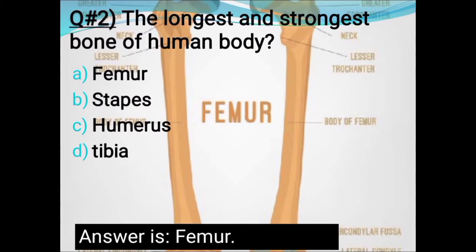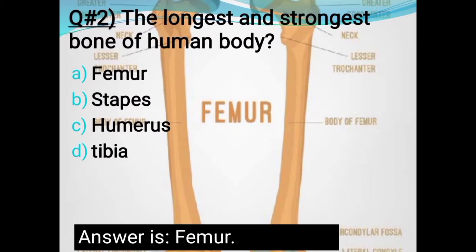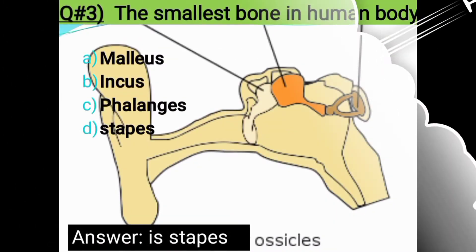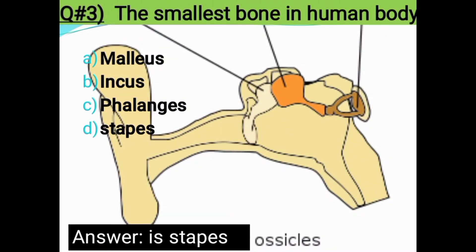Question number two: What is the longest and strongest bone of the human body? Options: Femur, Stapes, Humerus, or Fibula. The correct answer is the Femur — it is the largest and strongest bone.